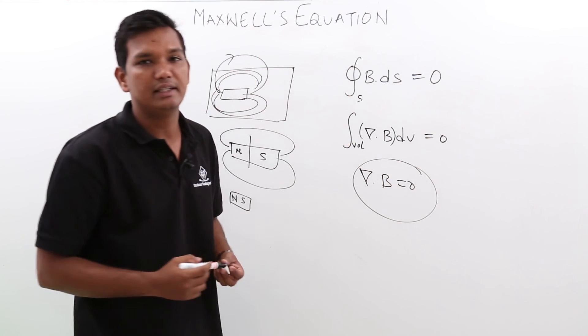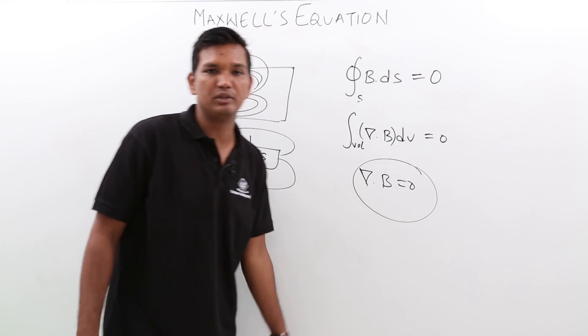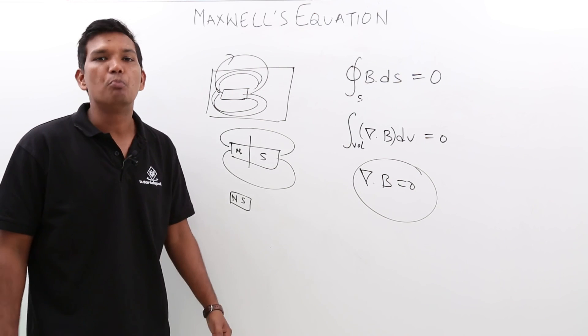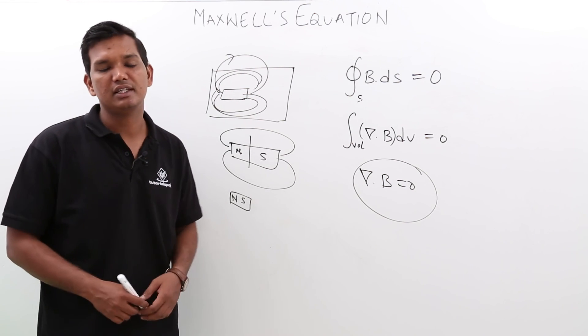This is called the second Maxwell equation and we have proved the second Maxwell equation. This is being derived in such a way that monopole does not exist in case of magnet. We will see more on this in the coming lectures.